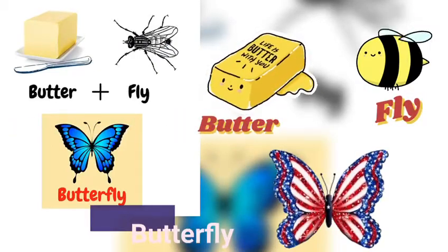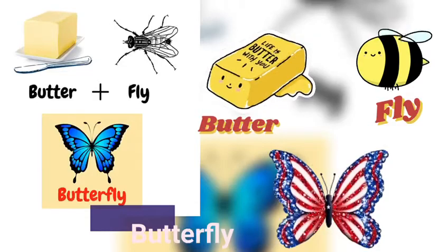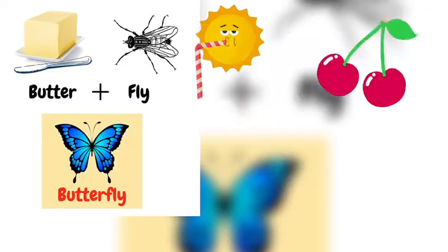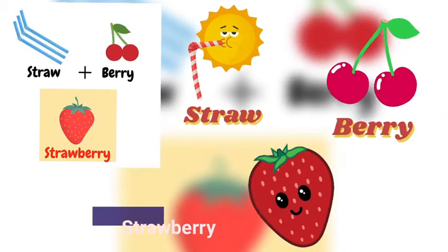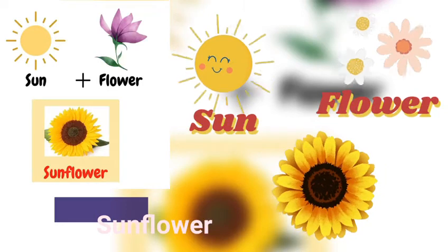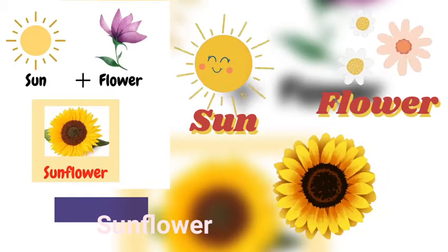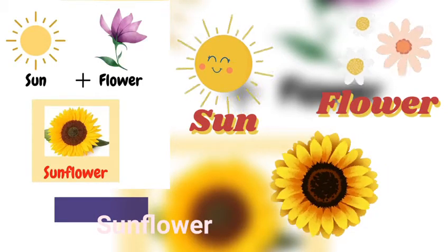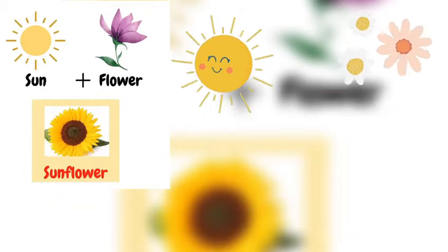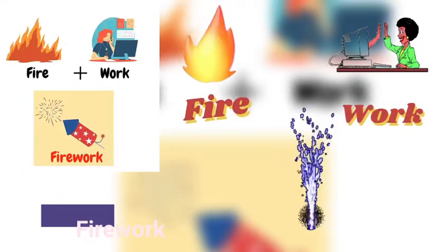'Butter' is one object, 'fly' is the second object — you connect them into 'butterfly'. 'Straw' is one object, 'berry' is the second object — you connect them into 'strawberry'. 'Sun' is one object, 'flower' is the second object — you connect them into 'sunflower'.